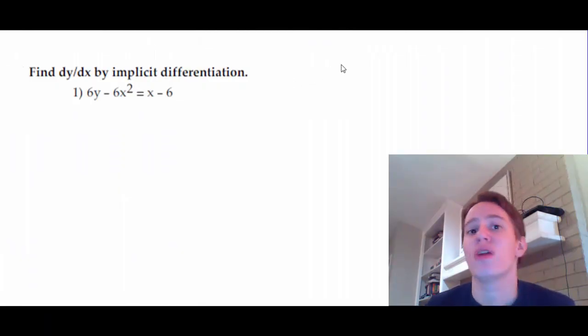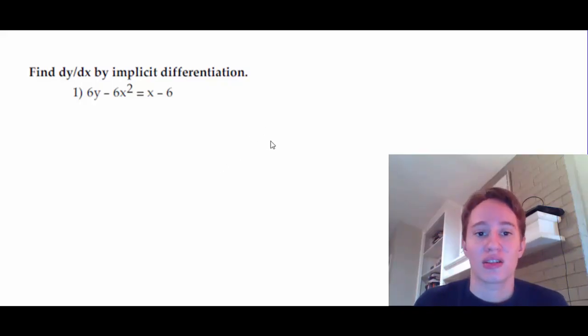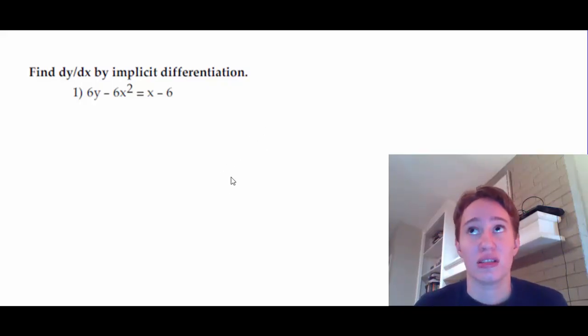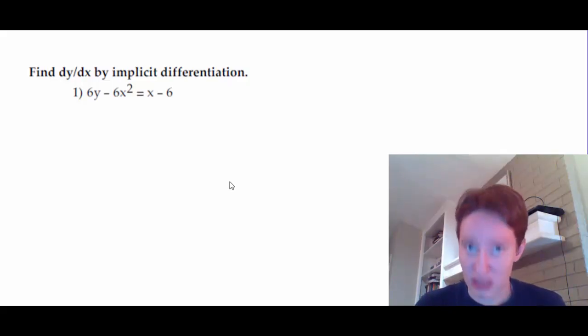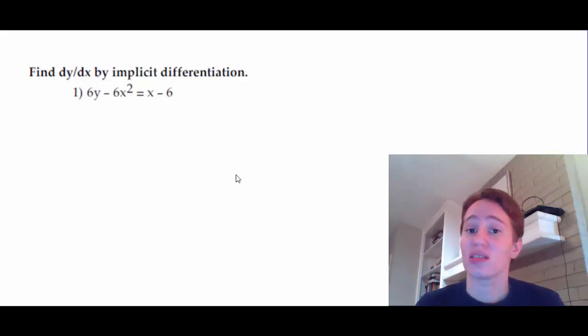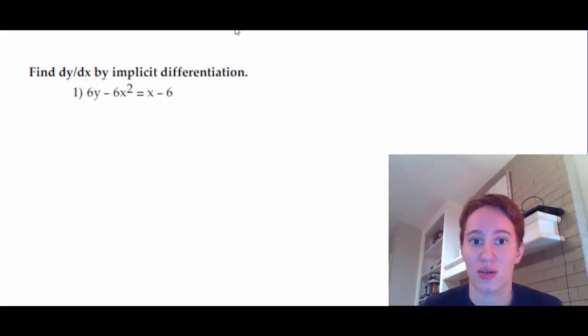Welcome to a review of 3.7 through 3.9. This is going to cover implicit differentiation, differentiating exponentials and logarithmic functions, differentiating inverse trig functions, as well as logarithmic differentiation. Starting with numbers one through five, which are implicit differentiation.